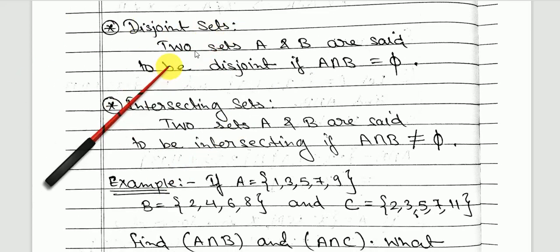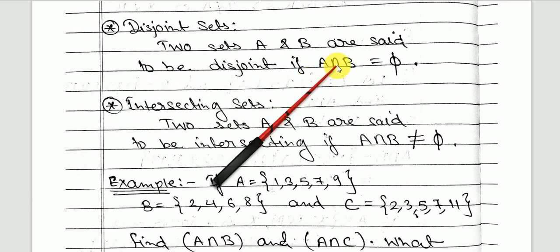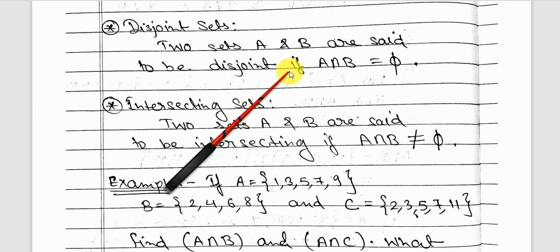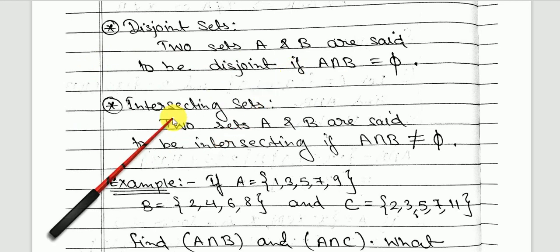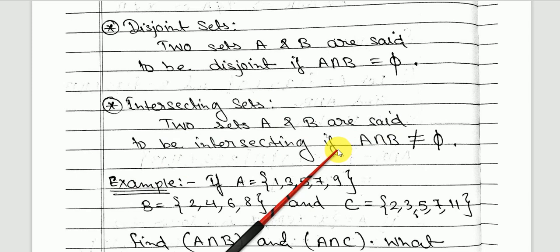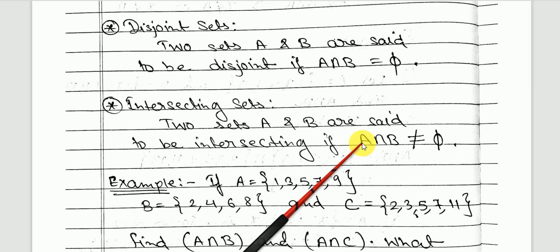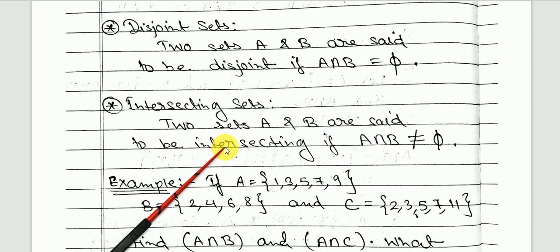Disjoint sets: two sets A and B are said to be disjoint if their intersection is empty — meaning they have nothing in common. Intersecting sets: two sets A and B are said to be intersecting if their intersection is non-empty, meaning they have at least one element in common.